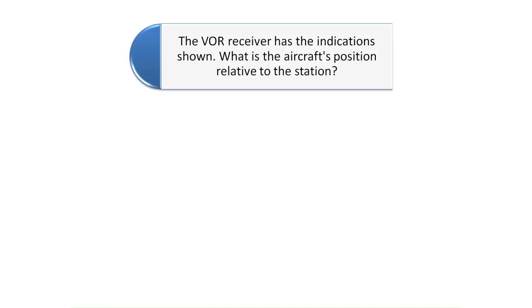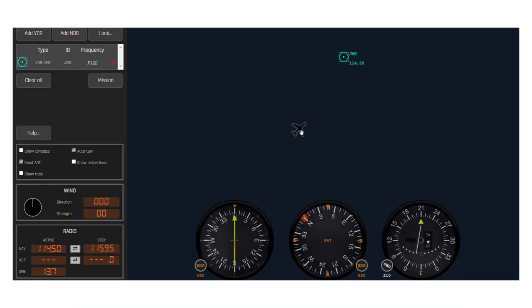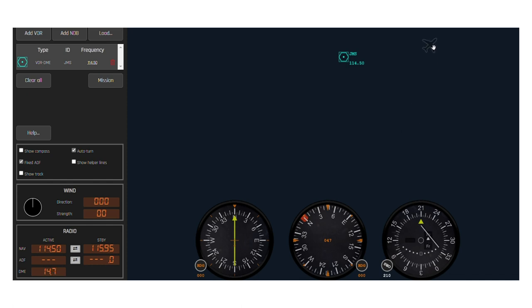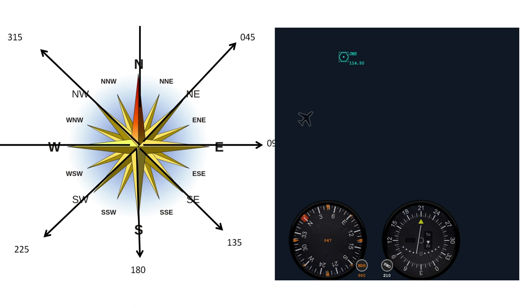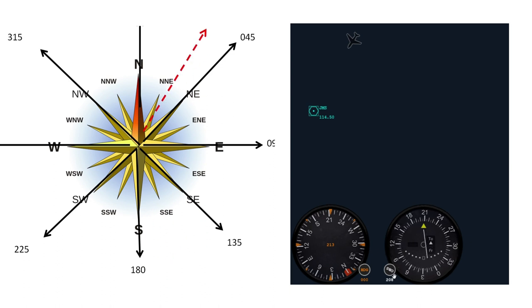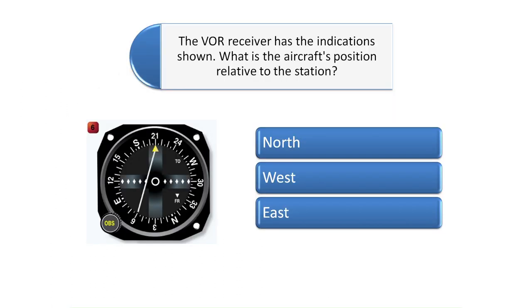The last question asks: the VOR receiver has the indications shown — what is the aircraft's position relative to the station? Back in the VOR simulator, we know we would be crossing somewhere near the 210 radial since the CDI needle shows a from indication and is deflected a few degrees to the left when turned to a heading of 210. The aircraft would be located to the west-southwest of the VOR. Conversely, if the CDI needle were centered on a heading of 210 with a to indication, we would be to the east-northeast of the VOR. Therefore, the correct answer for the last question is west.